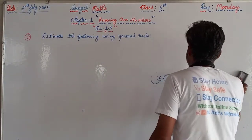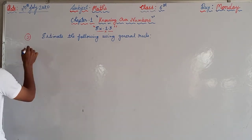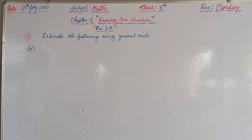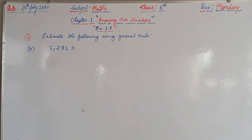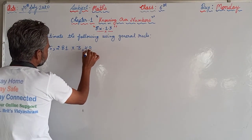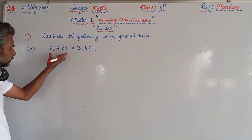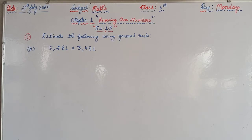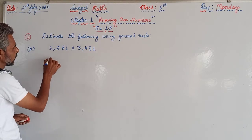At the same time, the second part: 5,281 × 3,490. So what we will do — we will round off both numbers. We will round off 5,281 to the nearest thousand, which gives us 5,000.